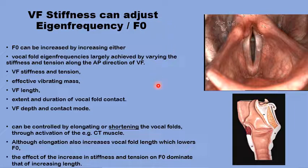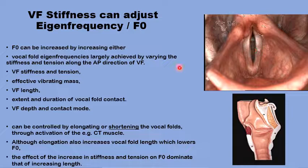To give an example: stretching the vocal folds by cricothyroid activation would increase the length of the vocal fold, which should decrease the fundamental frequency. But on the other hand, the activation of the cricothyroid would increase the stiffness and tension in the anteroposterior direction of the vocal fold. The effect of the increase in stiffness would outweigh the effect of the increase in length, so the ultimate result would be that the fundamental frequency would actually increase.